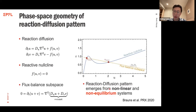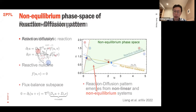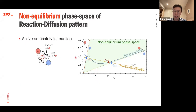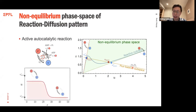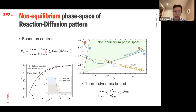What has not yet been addressed is where the non-equilibrium nature of the system enters. We can define the non-equilibrium phase space, and all reactive nullclines must lie inside this non-equilibrium phase space. For a nonlinear system, the two boundaries come from the two reaction pathways, and the intersection of the flux balance subspace with the two boundaries defines a thermodynamic bound. For a 1D pattern, we obtain a thermodynamic bound on the concentration range, from which we immediately get a bound on the pattern contrast.